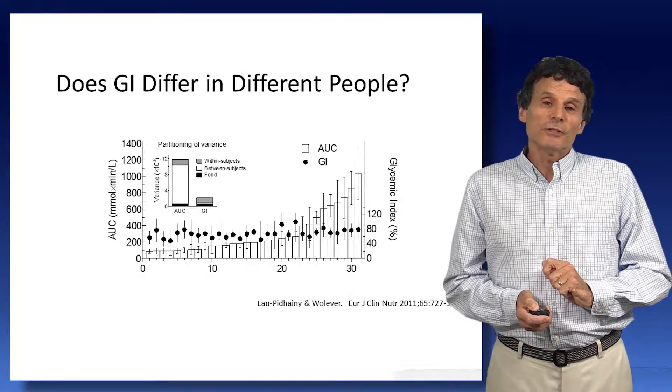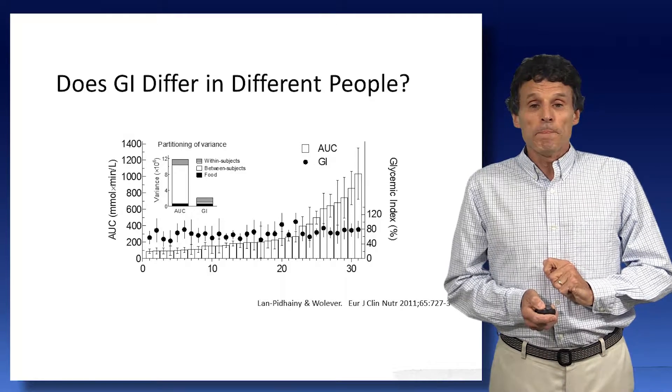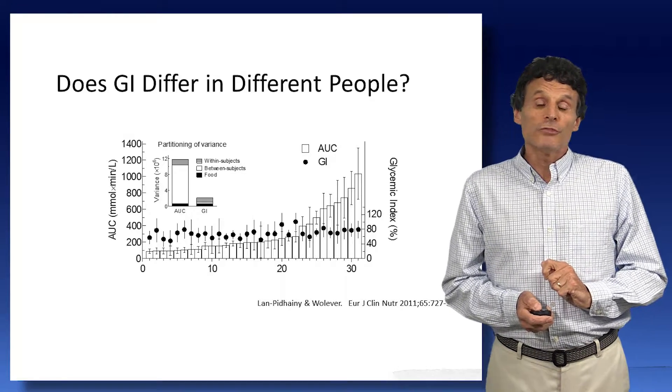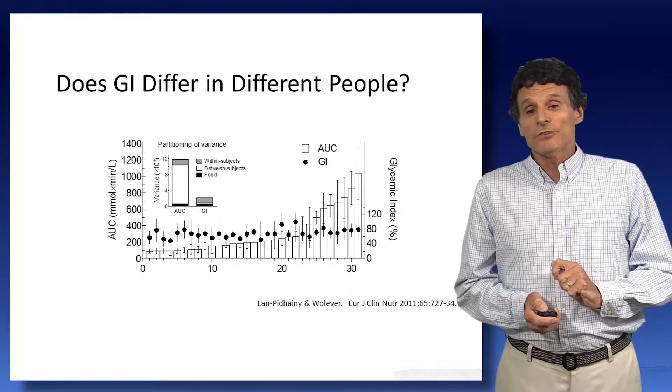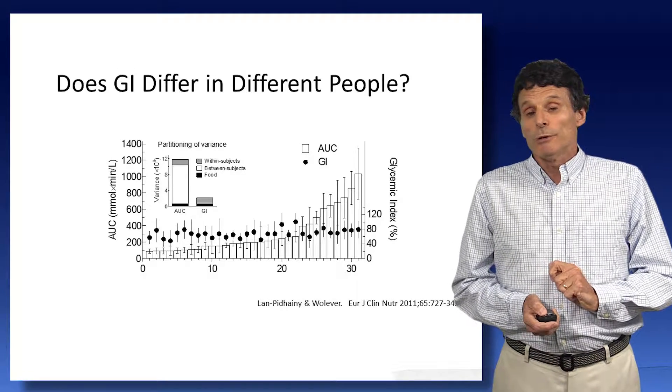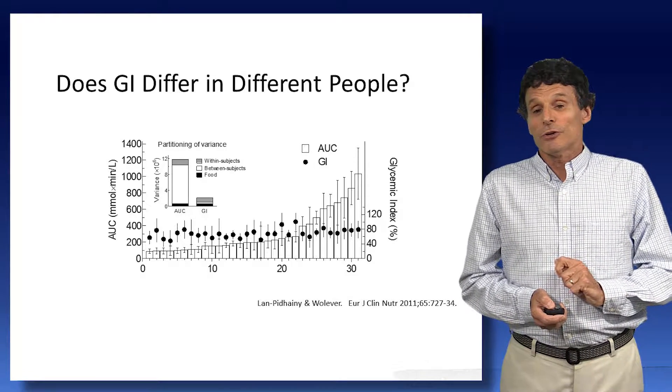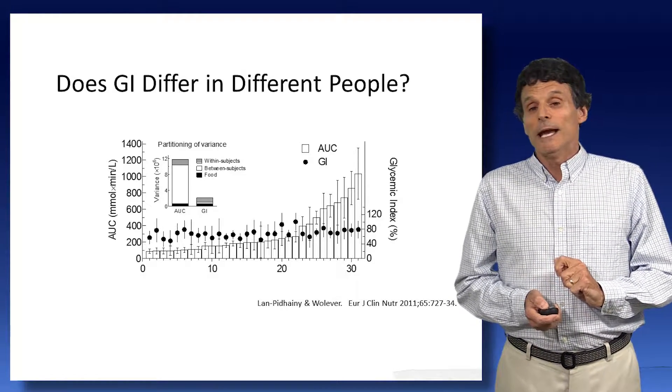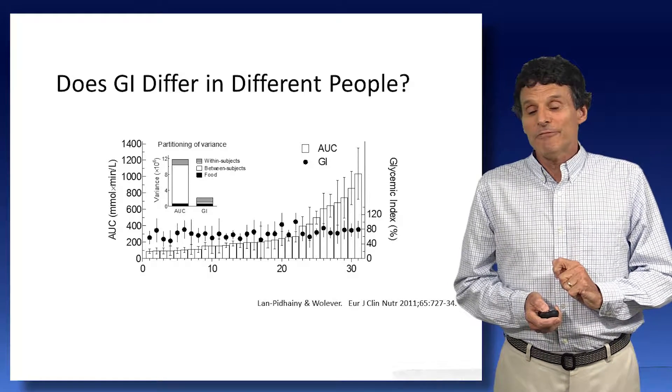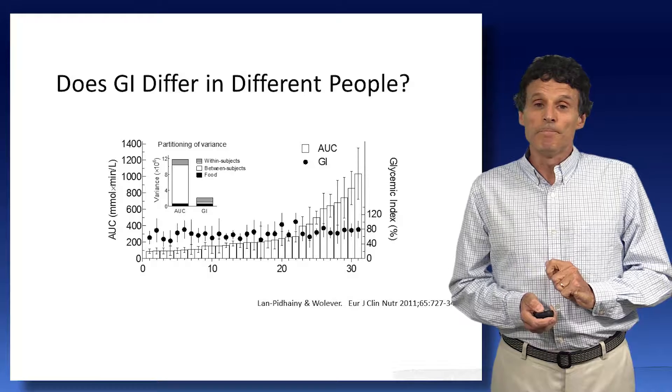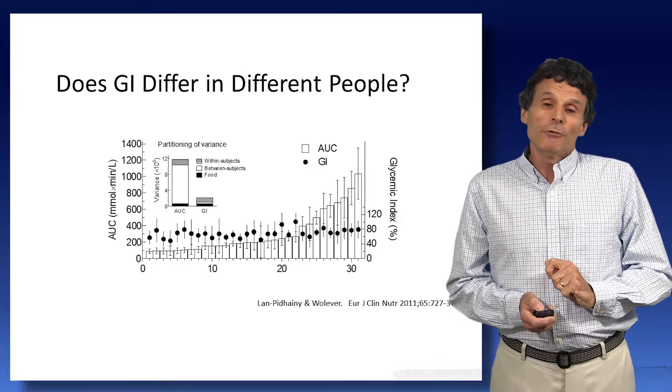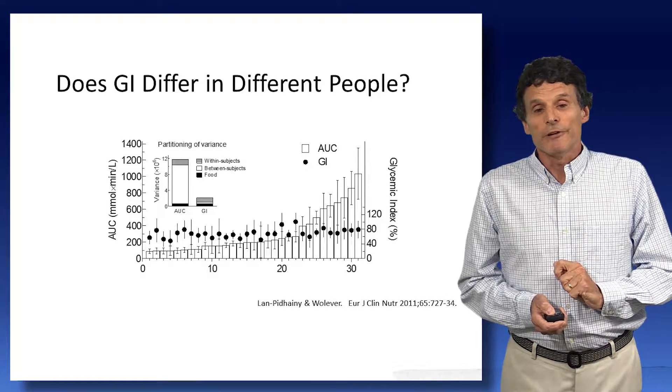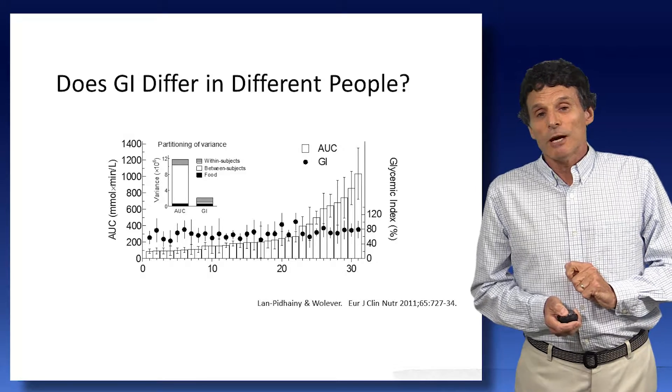So we've done several studies to look to see whether it does differ in different people. Glucose responses vary tremendously from day to day within subjects. And this is a source of large variation. This is the latest study, the most recent study we did, where we looked at the GI and the area under the curve for five carbohydrate foods in normal subjects, insulin-resistant subjects, and people with type 2 diabetes. And there's a tenfold range of glycemic responses, AUC. But the black circles represent the GI values in the mean of the five foods in each person. And you can see these don't vary very much.